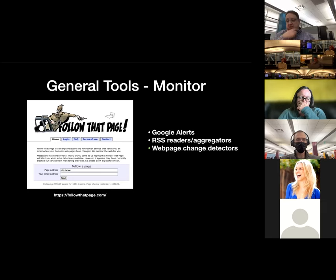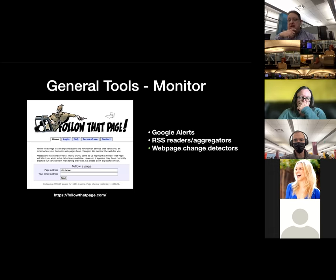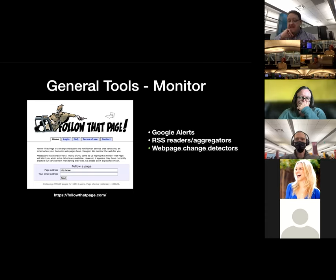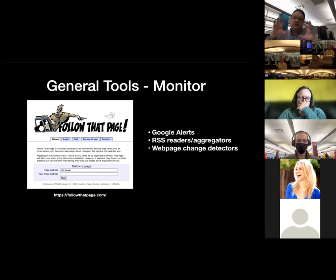These tools also offer integrations with other services like Google Docs and Dropbox, so you can automatically have data saved into spreadsheets or folders. And if none of the above work — like a page that has no RSS feed or email alerts — you can use a website change detector service like Follow That Page to notify you when a page has changed. It's free, simple, and the notifications can be delivered as email updates or RSS feeds to your reader.